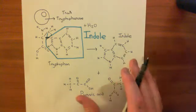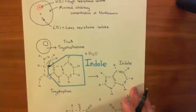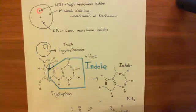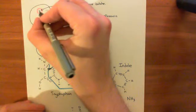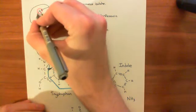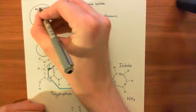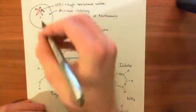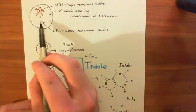What's going to happen is that this bacterium, this resistant bacterium, this high-resistance isolate, is going to start releasing indole into the surroundings. It's releasing indole, basically.